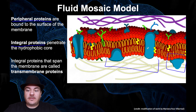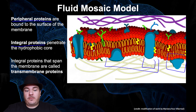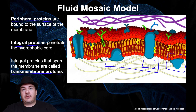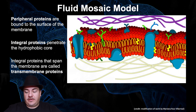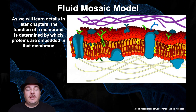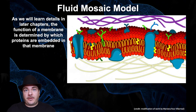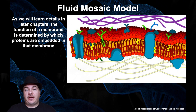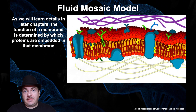An integral membrane protein that spans the membrane, crossing all the way from one side to the other, is more specifically called a transmembrane protein. Different membranes inside the cell have different functions — your plasma membrane does something different than the membrane inside the mitochondria, which differs from the membrane inside the chloroplast. What gives these membranes their different functions is which proteins are embedded in them.